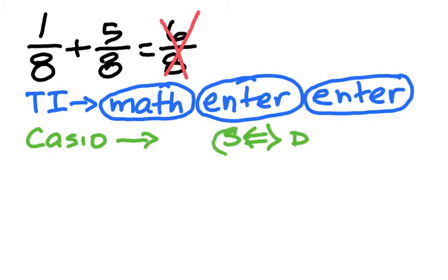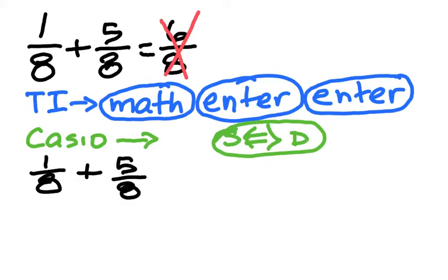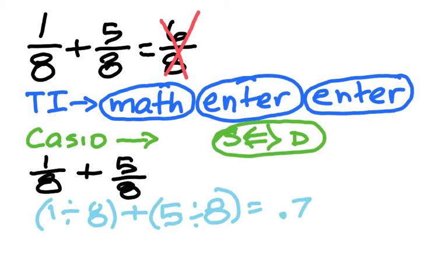So, what we're going to do is go back to the initial question. So we have 1/8 plus 5/8. And another way of writing that is using division. So, 1 divided by 8 plus 5 divided by 8. Now, this seems like a lot, and to be honest, you don't really need the parentheses right now. It's just a good habit to get into. So, 1 divided by 8 plus 5 divided by 8 is going to give you 0.75.